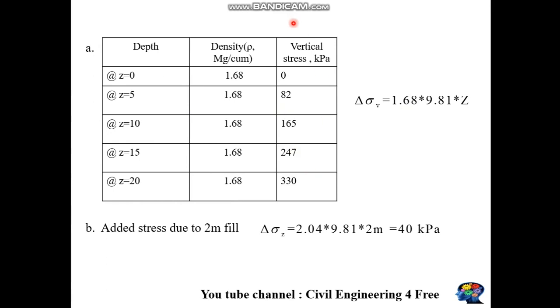This gives us the effective overburden pressure. Since pore water pressure is absent, with increasing depth the vertical stress increases. Minimum stress is at the surface, maximum at Z = 20m.